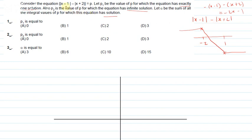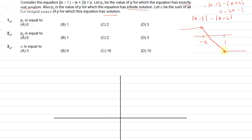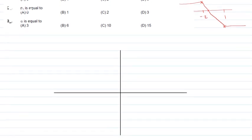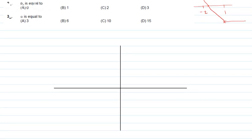Now, what is the graph in the middle region? The expression is -2x - 1, which equals zero at x = -1/2. So the zero crossing is at minus half. This is where -2x - 1 equals zero, giving us x = -1/2. We will now draw this graph accordingly.